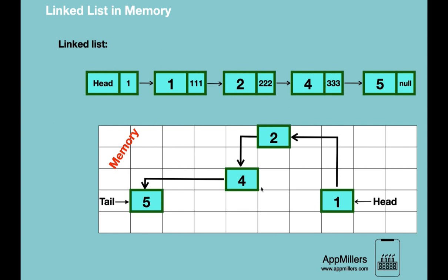The cells next to a node may be empty, confirming that nodes are not located contiguously. Each node needs extra memory space for a pointer to link nodes. The random allocation allows us to add as many nodes as required, since the size does not need to be specified at declaration time — it allows dynamic resizing at runtime. Because of random location, we cannot access any given element directly; we must traverse from the first element.